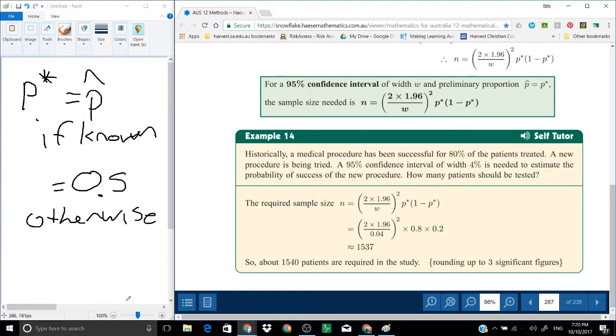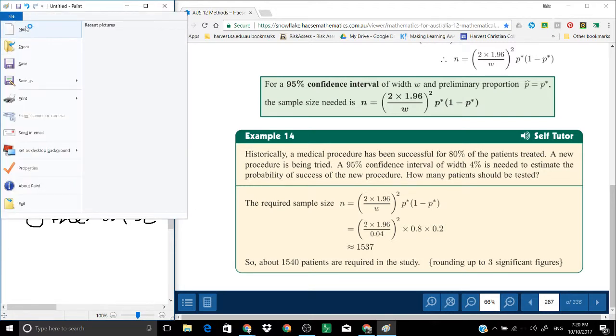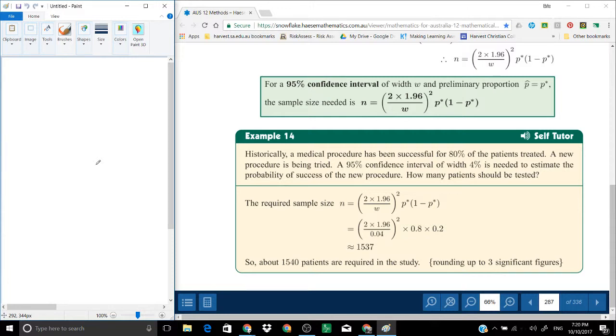They've put in the numbers and you can see p star, they've used the 80%, 0.8 proportion that was known beforehand. You're rounding that and you round up to the nearest, in this case eventually rounded to the nearest 10. I would round to the nearest person. Or if hopefully the exam question is out of something that's out of a hundred. But you would always round up, because you need to have a width smaller. If you have a larger n, you have smaller width.